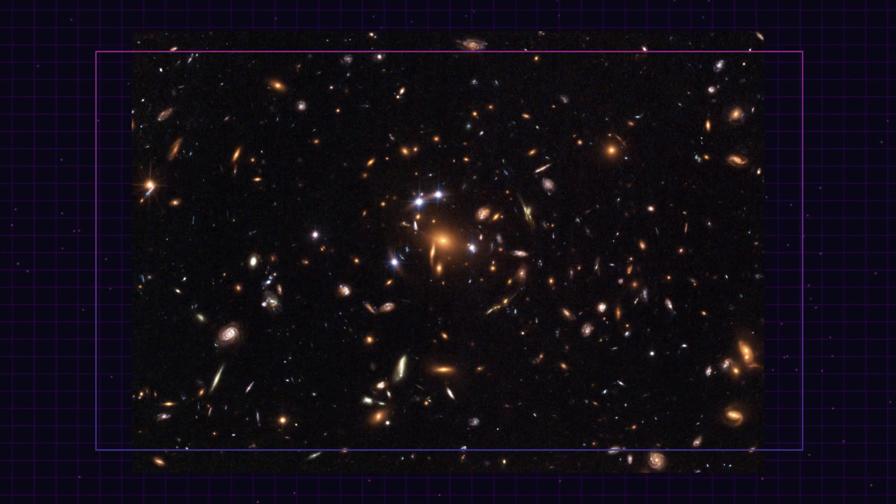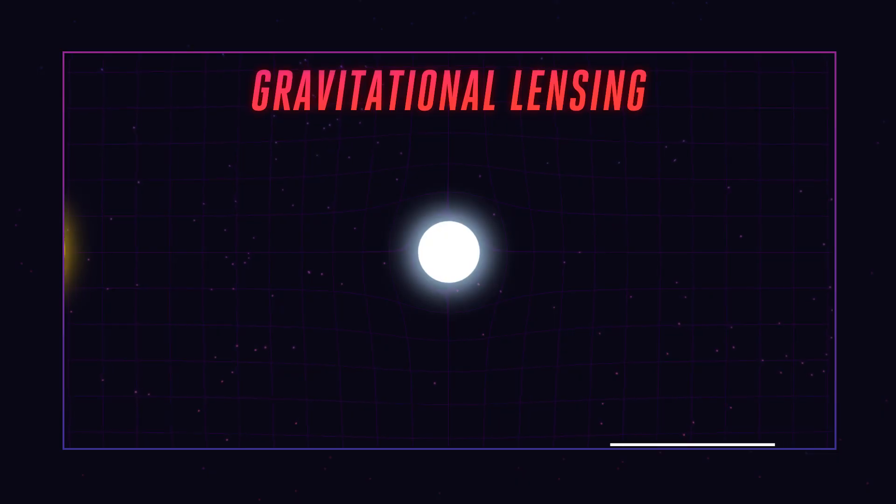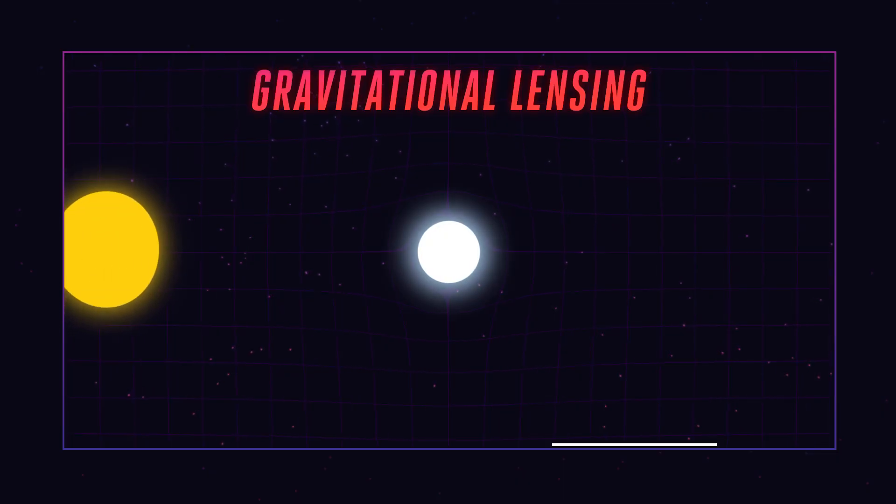Changing the path that light takes through the universe, microlensing occurs when a star passes behind another star along our line of sight from Earth. The warping from the foreground star then amplifies the light from the background star, making it appear brighter and distorted.